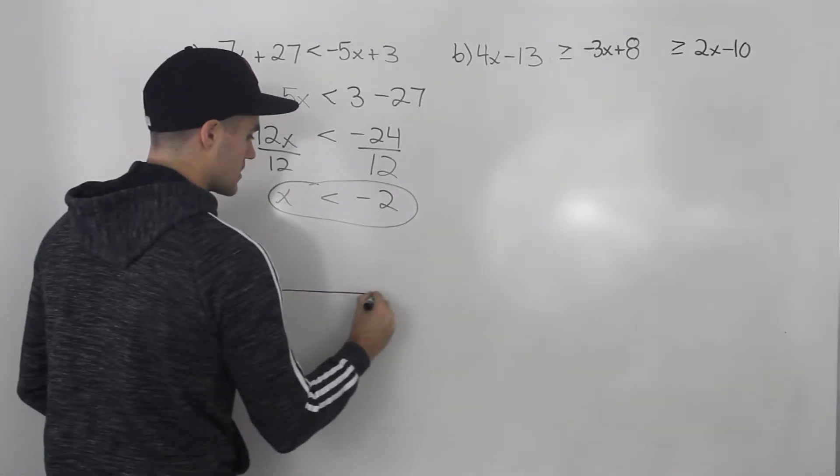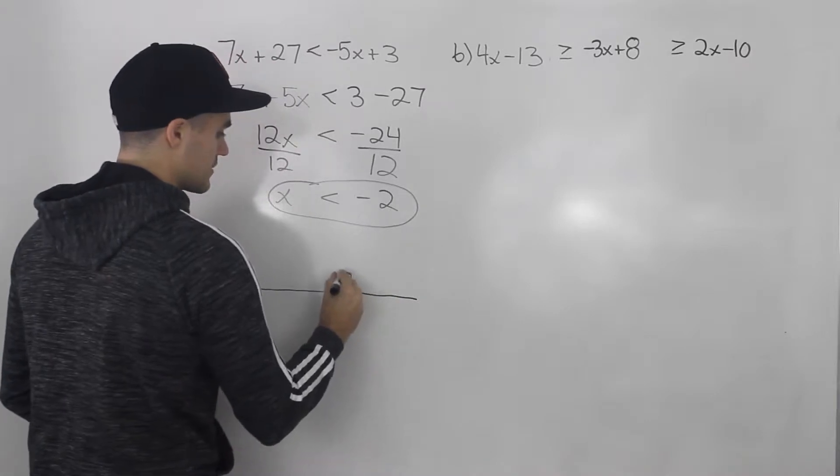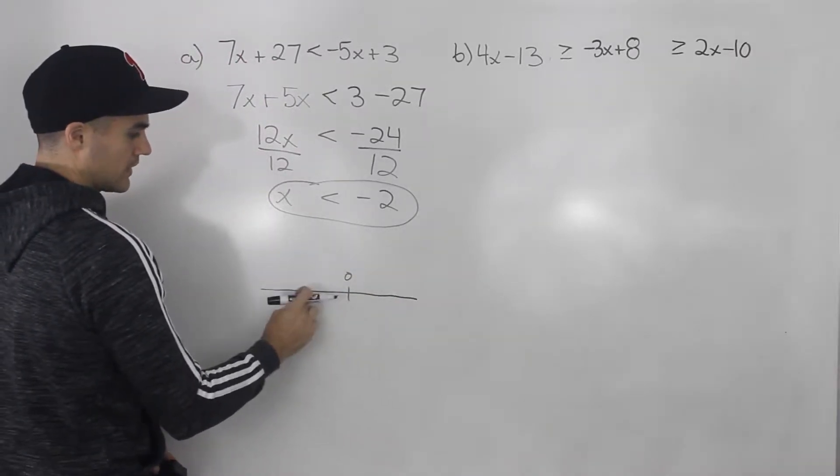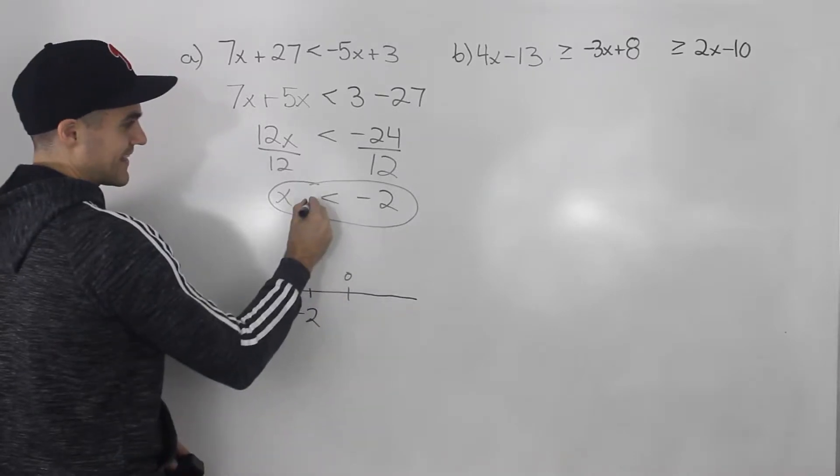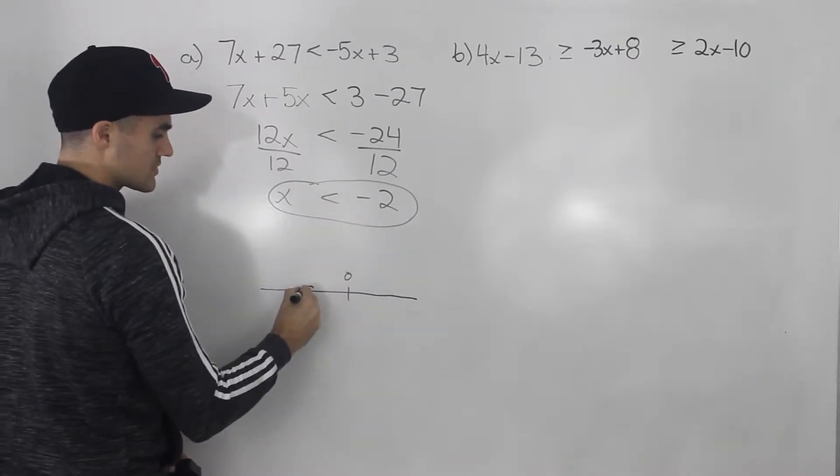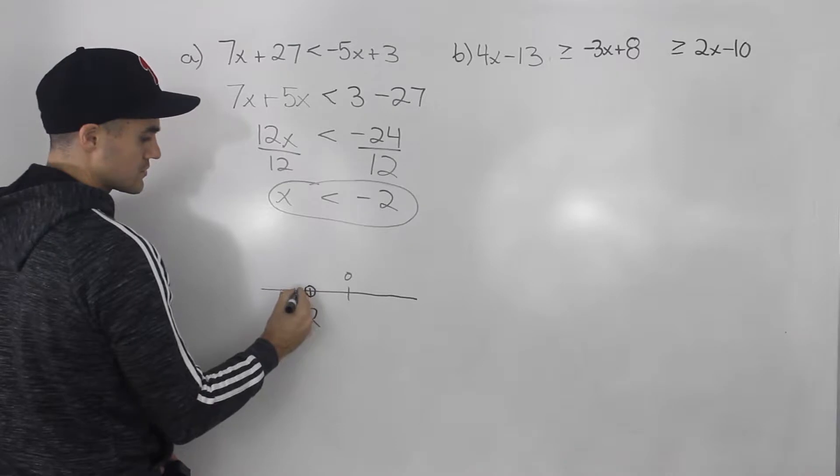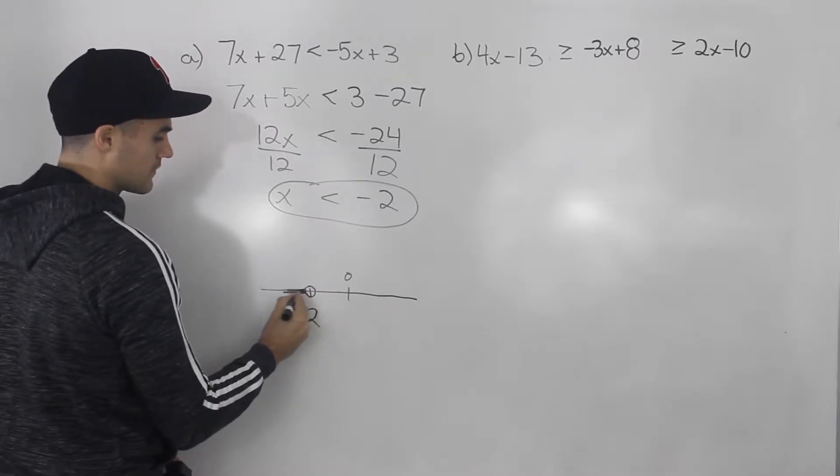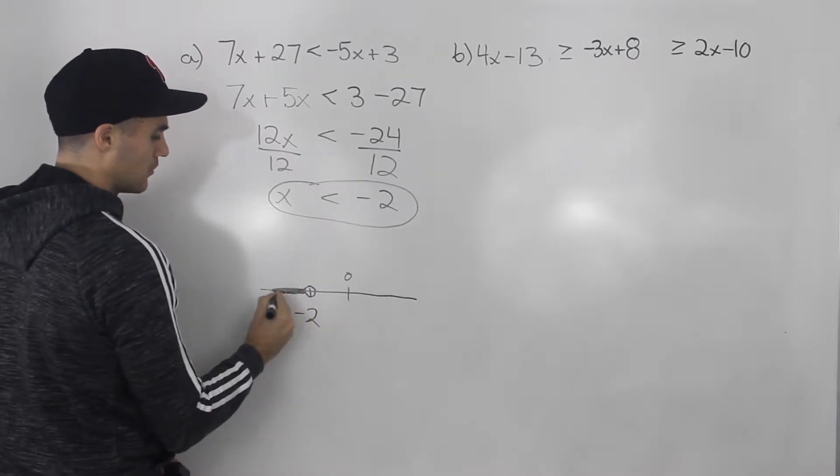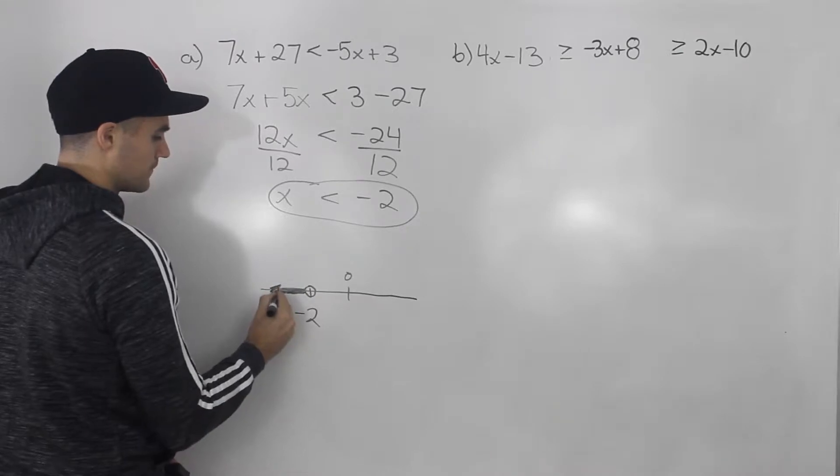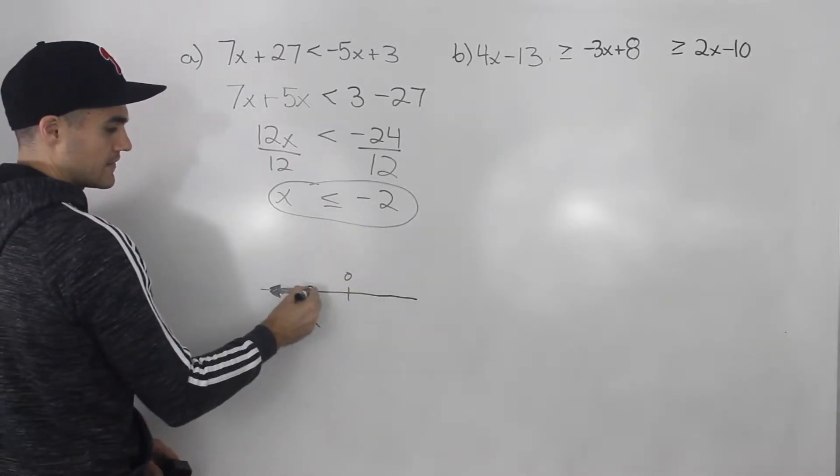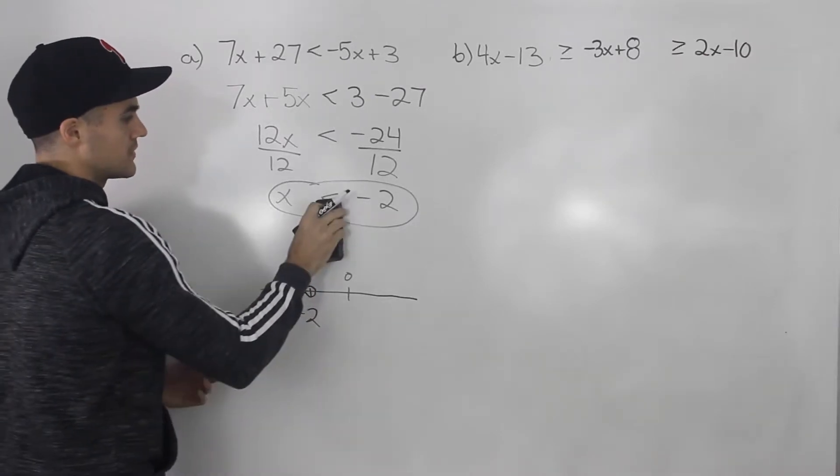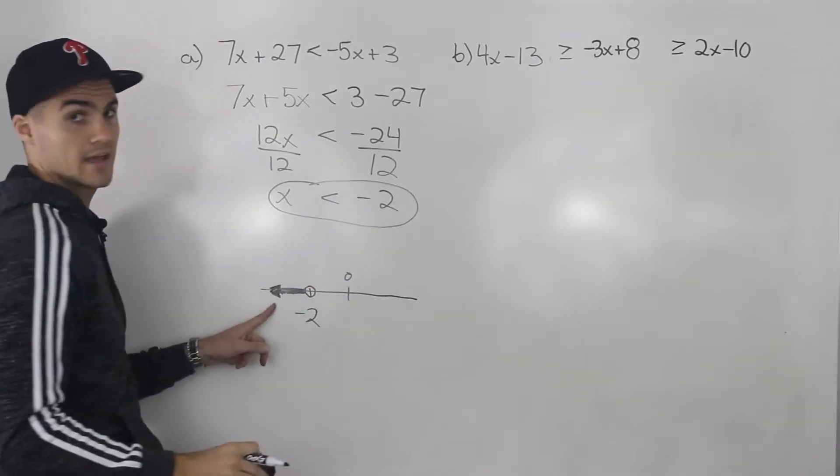Now if you want to show this on a number line, let's say here's 0. Well, negative 2 would be over here. And because it's less than negative 2, it's not inclusive of negative 2. So there would be an open dot there. And then we would just put an arrow that goes this way. If it was inclusive of negative 2 like that, then this dot would be closed. But it's not. So it's just an open dot.